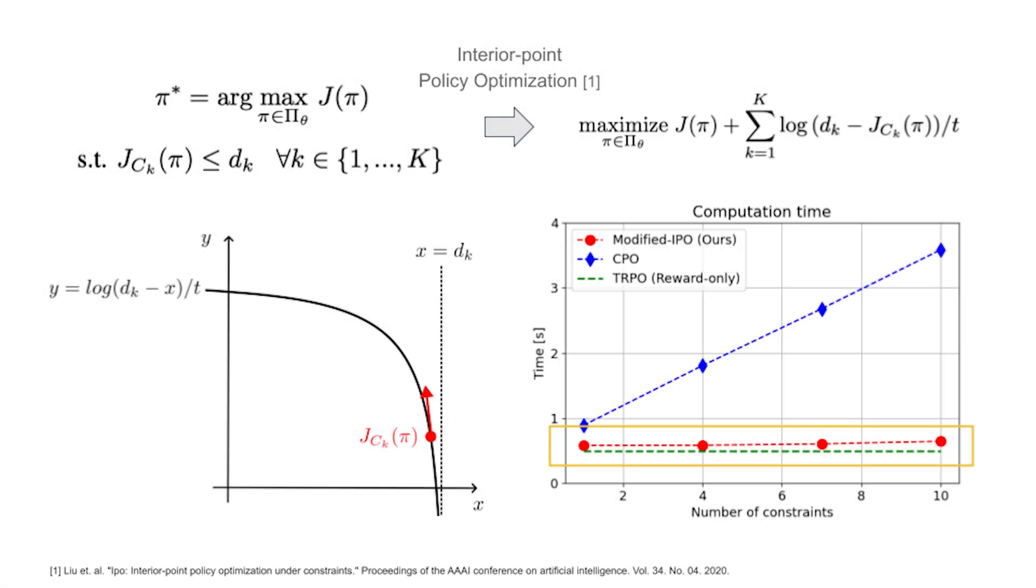We use interior point policy optimization with logarithmic barrier functions to search for a policy with a negligible amount of additional computation cost.